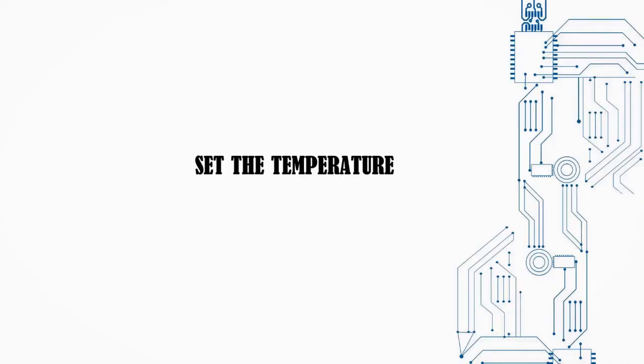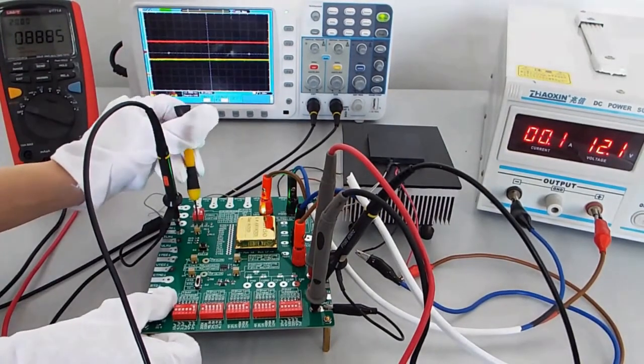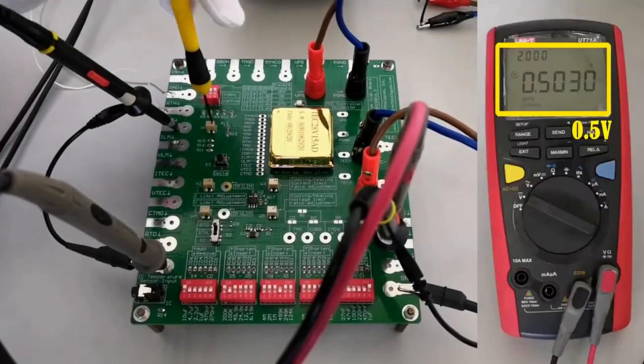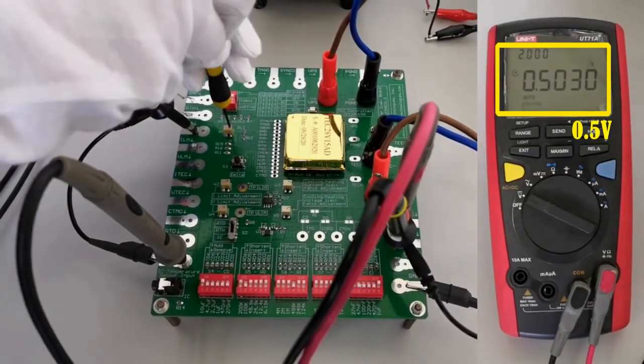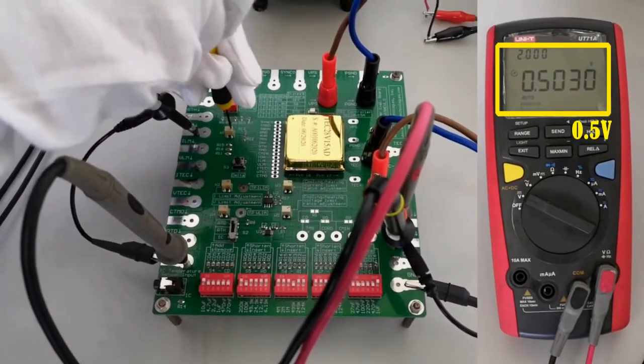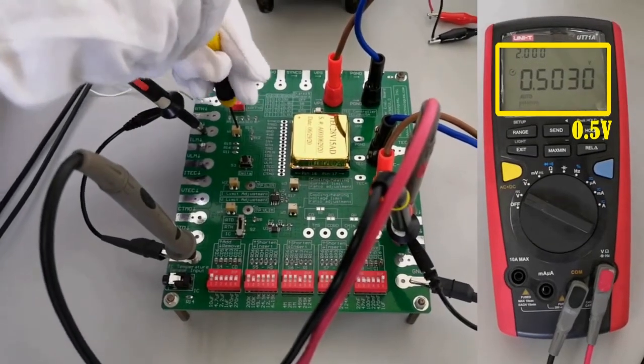Set the temperature. Adjust the potentiometer to set the TMS pin voltage to 0.5 volts which stands for 17.5 Celsius degrees. At this time, the room temperature is 26.4 Celsius degrees and the product starts to cool down.